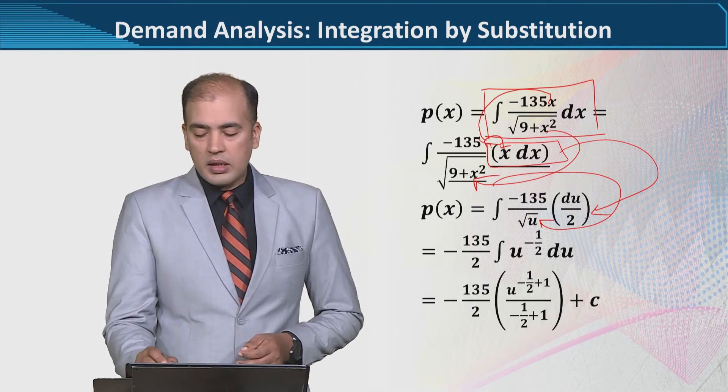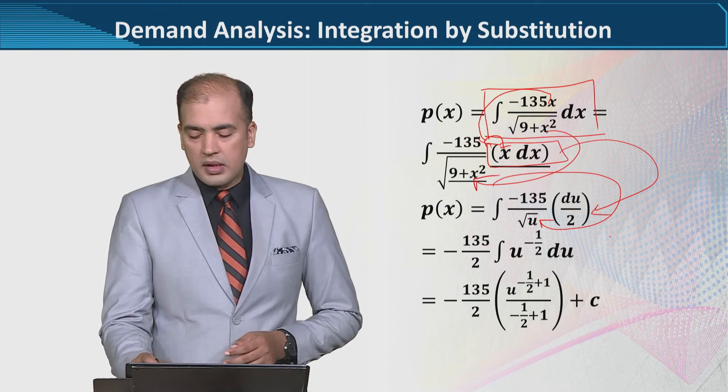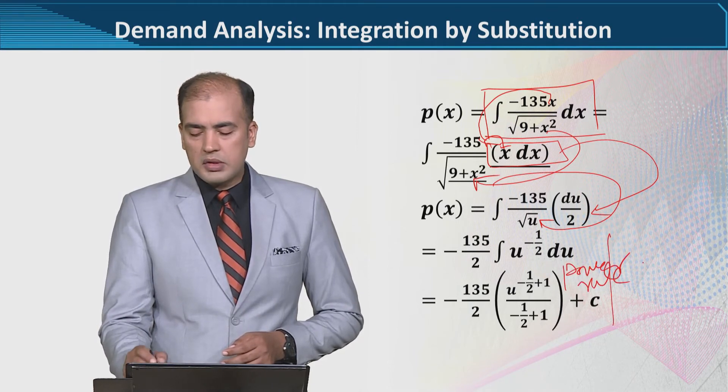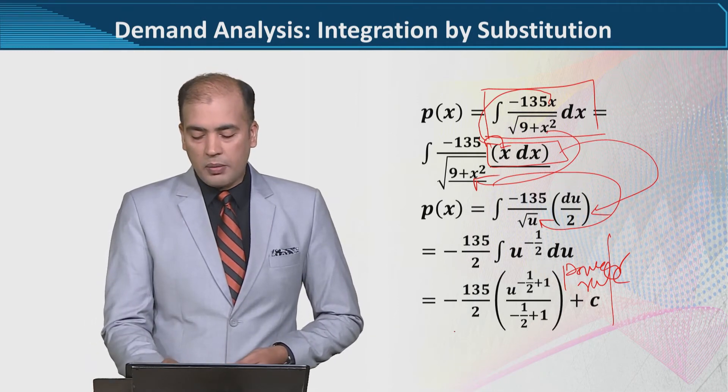You see we revived the expression that we had discontinued earlier. What we assumed equal to u, we put u there. And this expression with x, we moved here so that x dx comes together, and this x dx equals what we just calculated. Now you see that in terms of u, the expression has formed. We can solve this using the power rule.